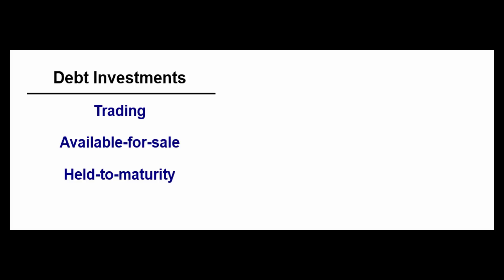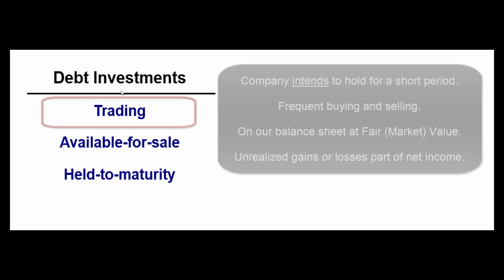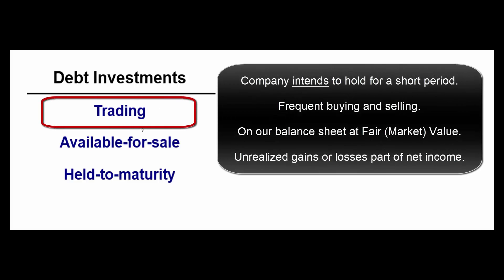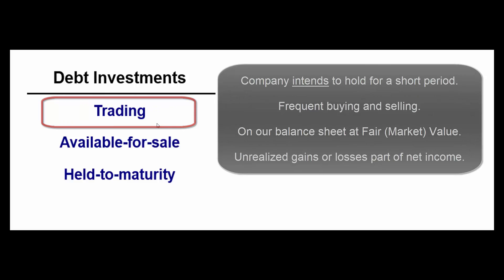What do I mean by those different categories? A trading bond is a bond we're going to buy or sell pretty quickly — it's usually a current asset. Sometime within the next year, maybe even within the next 30 days, we're going to sell that bond. The way I think about these: we're telling the world we're smart, we can buy and sell these bonds and make money.